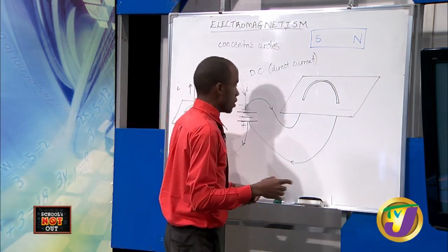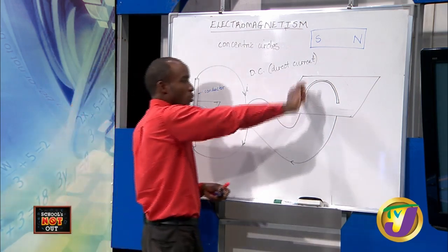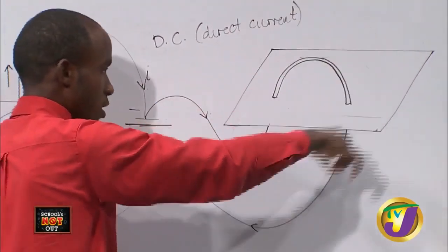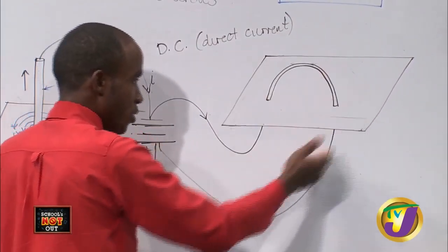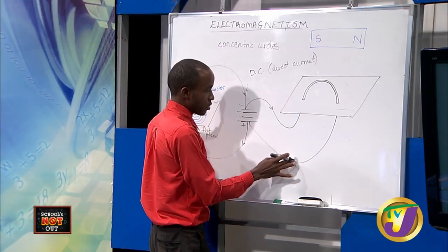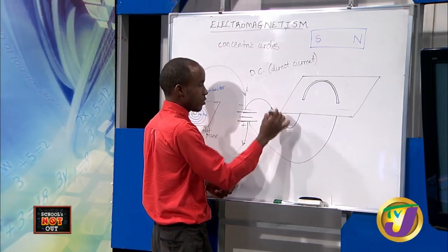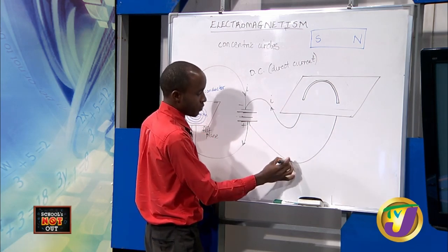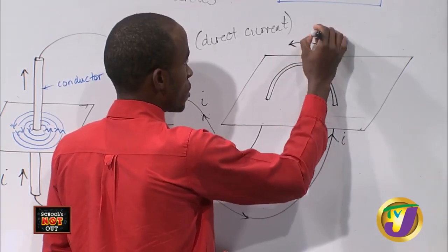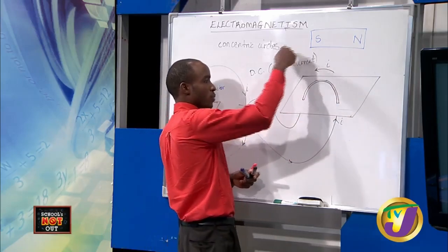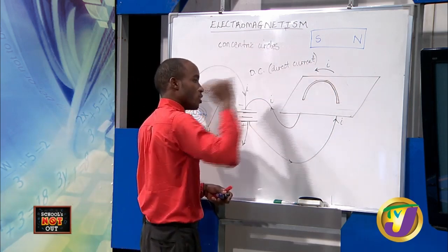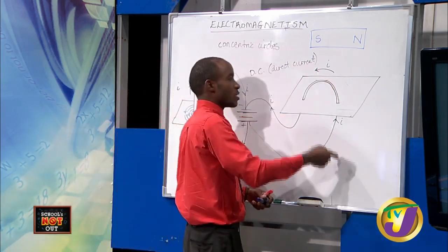Let us look at a situation where we take that same straight conductor and loop it into a circle. This is just the top half of a circular conductor. If that current is carried through a circular conductor — remember, conventional current flows from positive to negative — the current I is going up and over. It's not a straight conductor now; it is instead a loop.